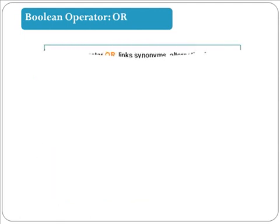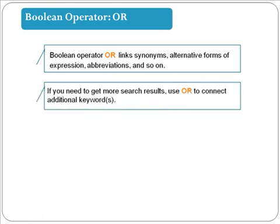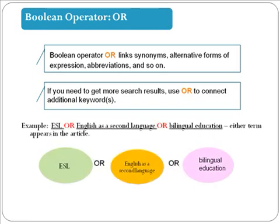The Boolean operator OR links synonyms, alternative forms of expression, abbreviations, and so on. To garner more search results, use OR to connect additional keywords. For example, if our topic is about ESL, we can use OR to include various forms of the word. In this search, articles that contain any of the keywords ESL, English as a second language, or bilingual education will be retrieved.